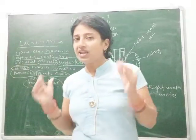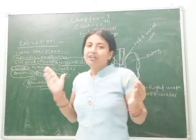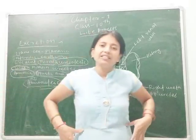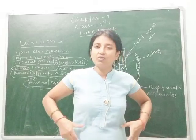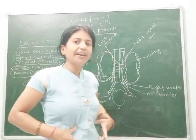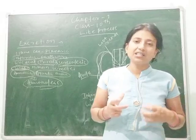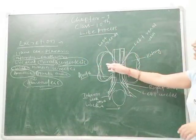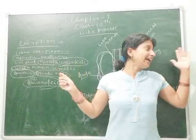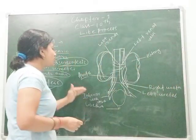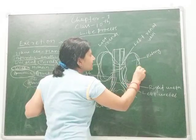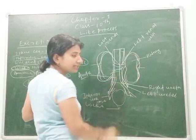Human beings are vertebrates with a vertebral column and a pair of kidneys situated in the lower abdominal region, towards the backbone. The kidney has a bean-shaped or rajma-like structure. Looking at the diagram, the right kidney and left kidney are on their respective sides, situated towards the lower abdominal region.